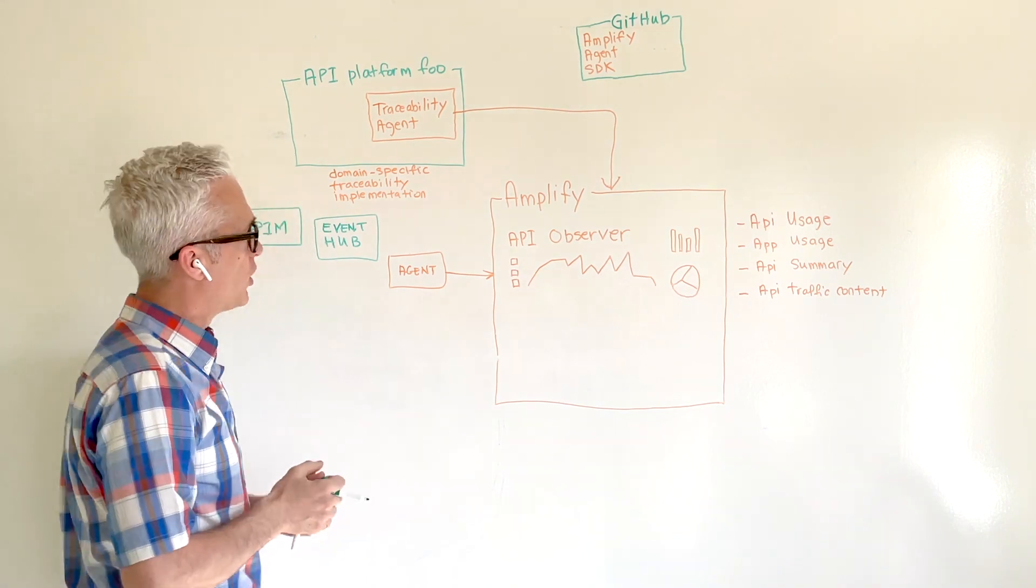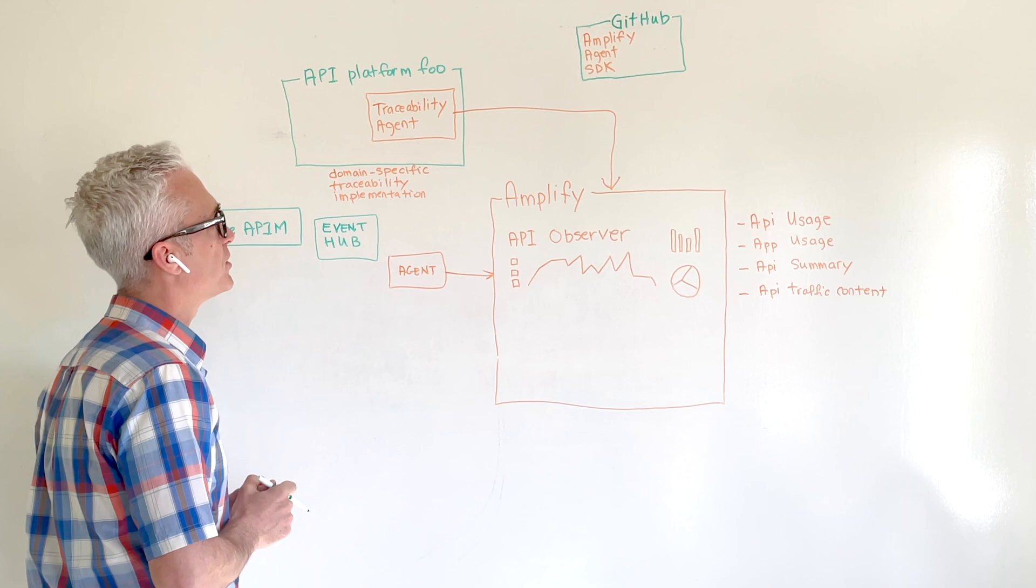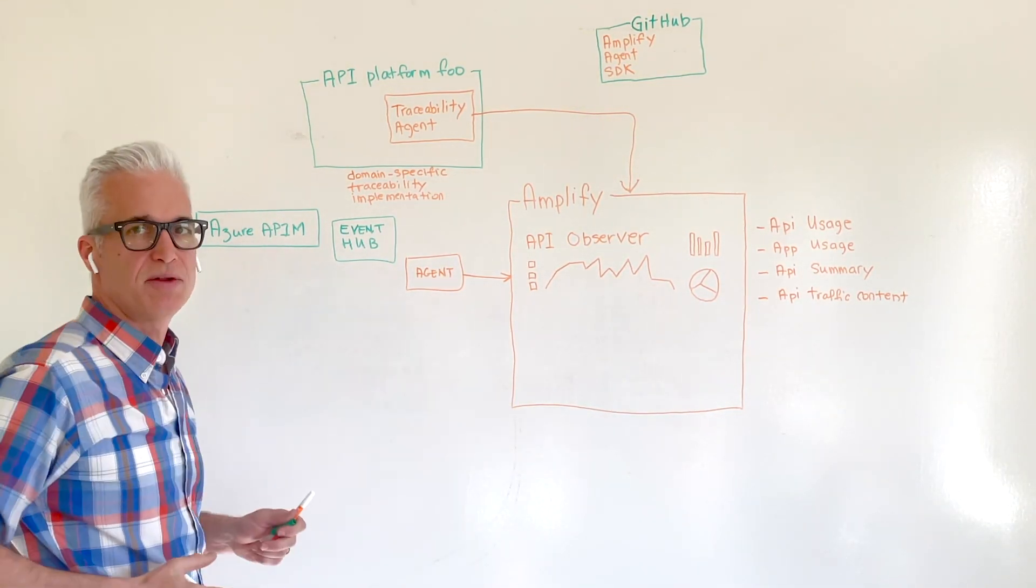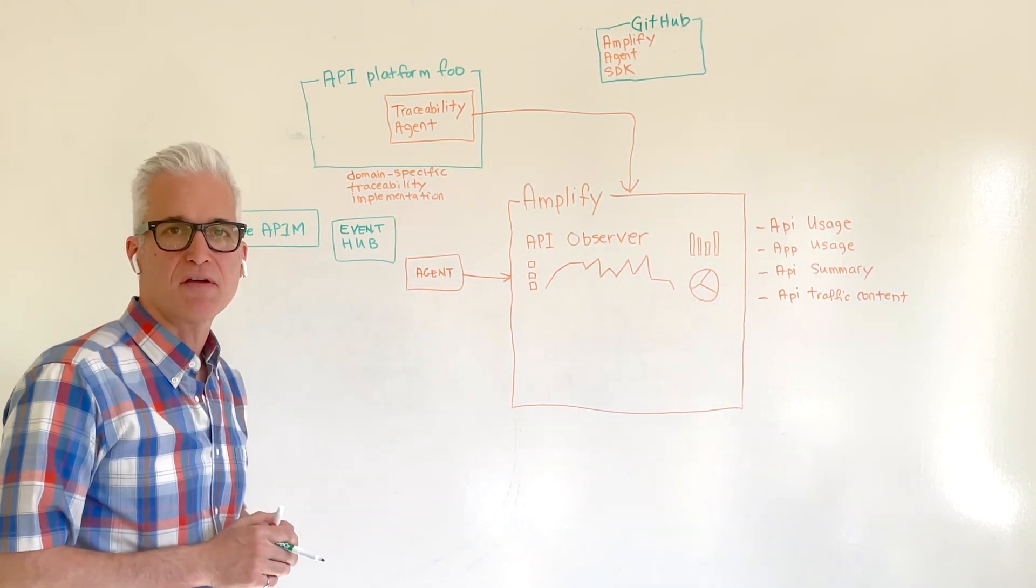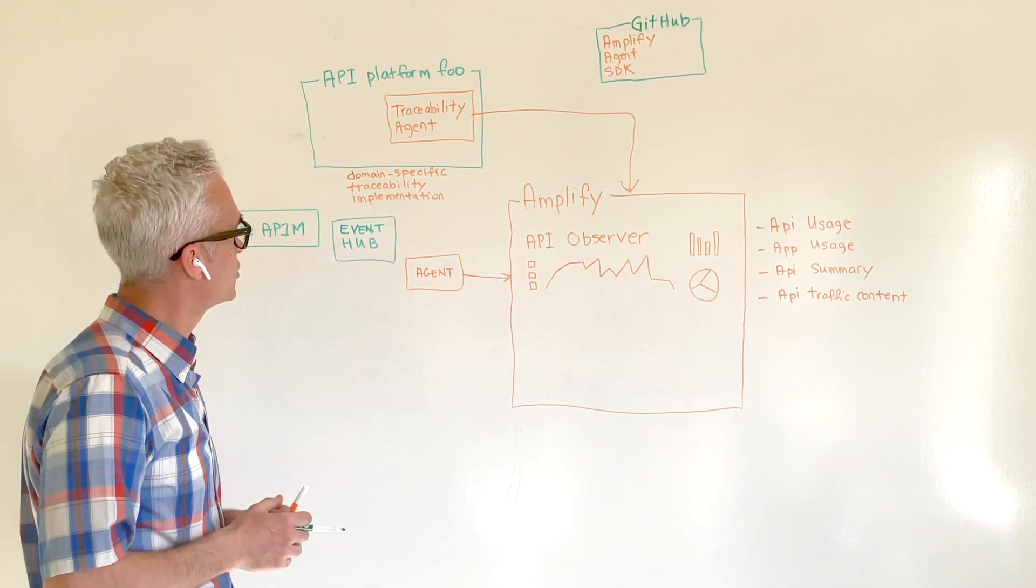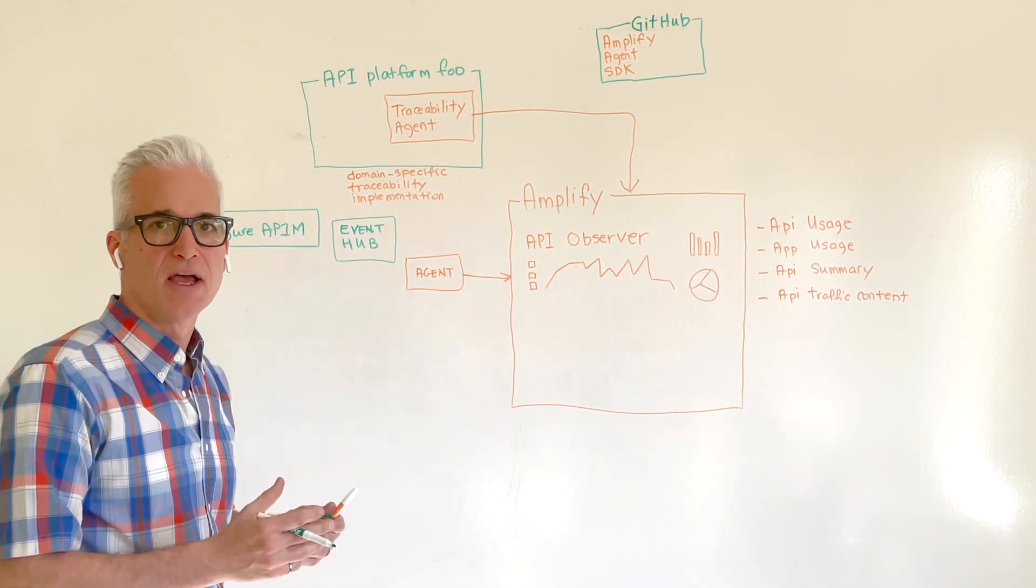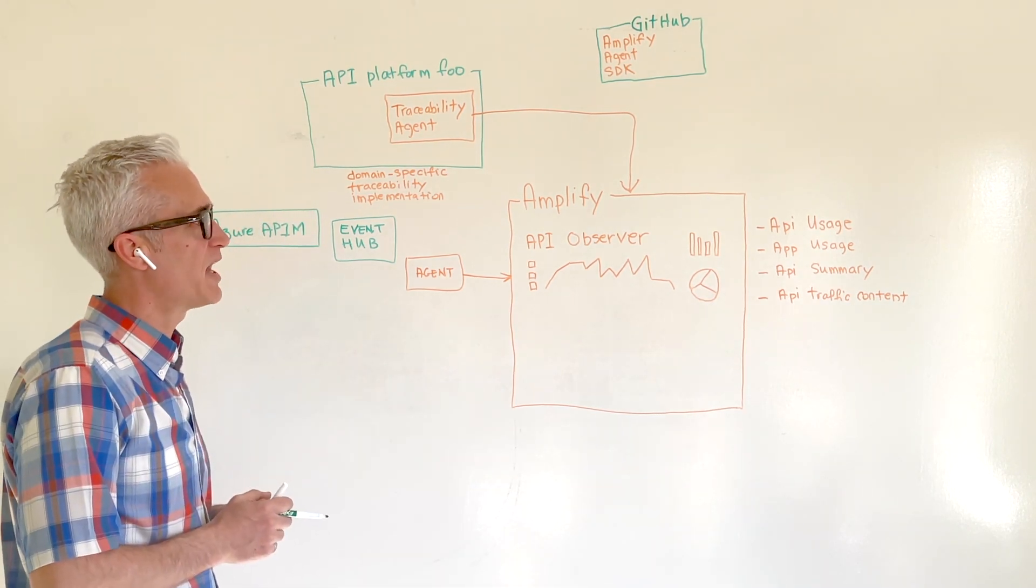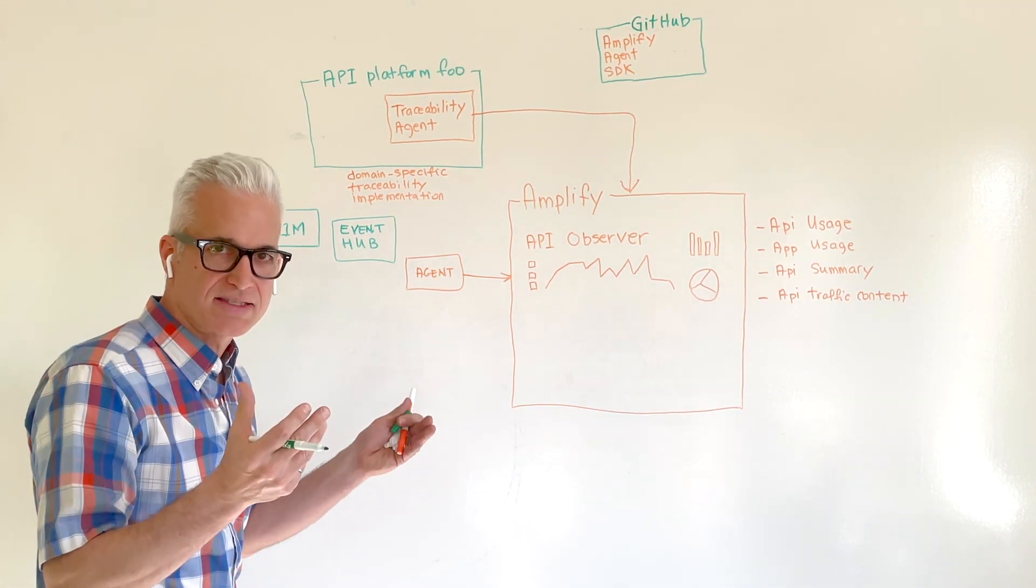If you're using instead Amazon API Gateway, our agent implementation leverages an Amazon-specific way of capturing that API traffic. In Amazon, we would use Amazon CloudWatch and some Lambda function would populate information onto an SQS that the agent would pick up. Again, that would be a very domain-specific, very efficient way of capturing that information without disrupting the API traffic and in a way that scales.